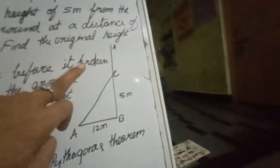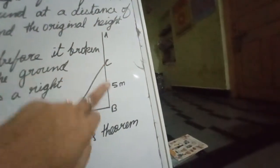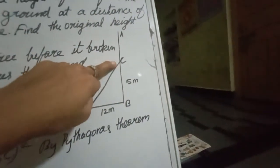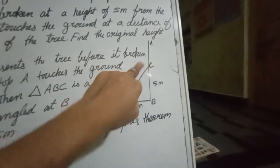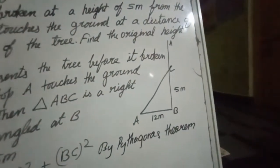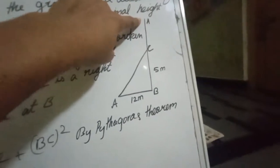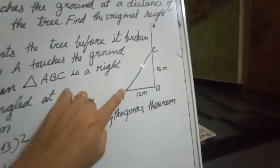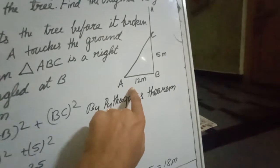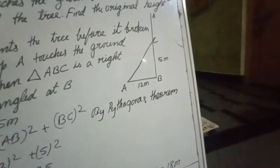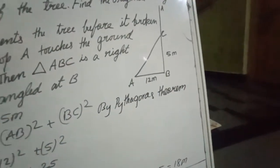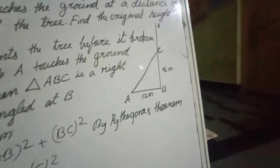A tree is broken at 5 meter from the ground. That point I have considered as C and its top, whatever the top, that top touches to the ground at a distance 12 meter from the base. Find the original height of the tree. We know that from here and this measurement, by seeing this you will understand. You can use the Pythagoras theorem.